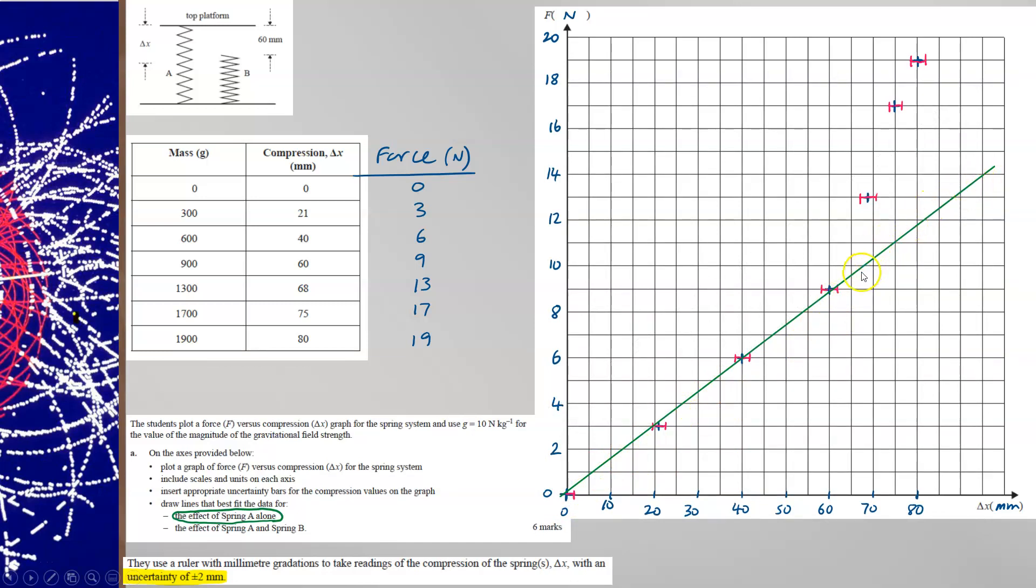I've continued it over here, but there's no need to continue. Just stop it at 60 millimetres if you wish. If spring A was being compressed on its own, it would continue like that. So it's an appropriate line of best fit.